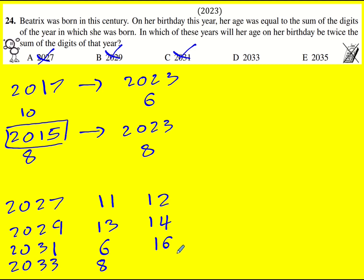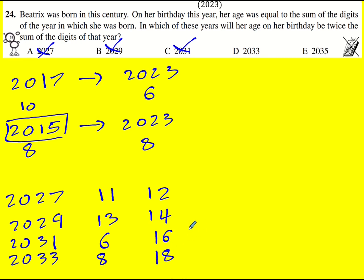Here it's eight and 15, 18, okay. So it's kind of got to be this last one, 2035. So the digit sum is 10 and her age would be 20. So that one works.